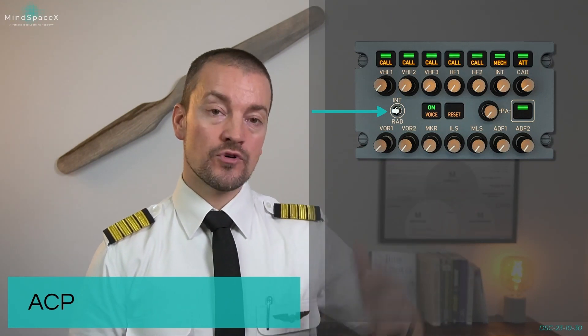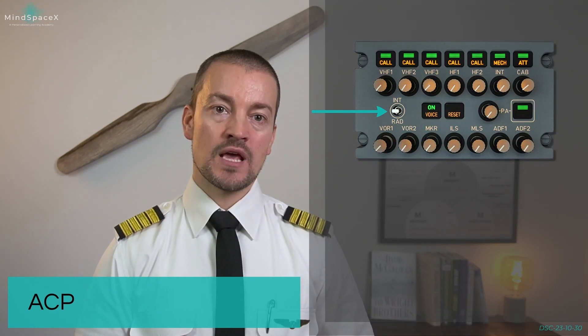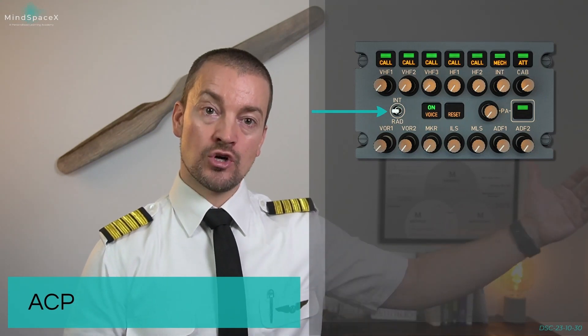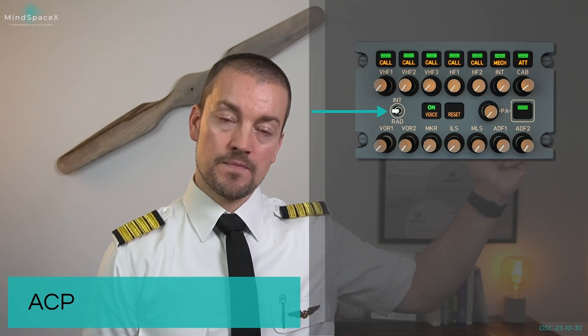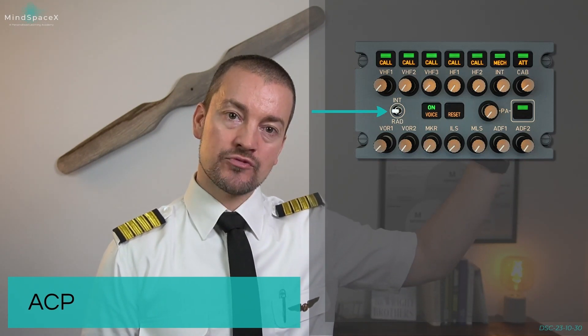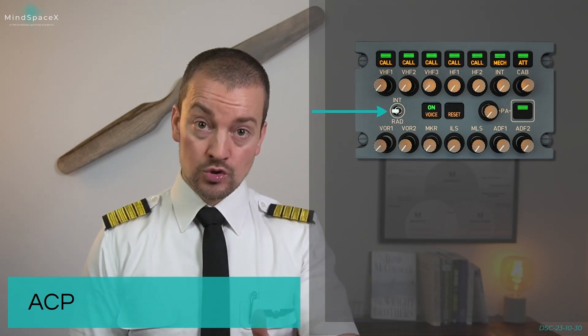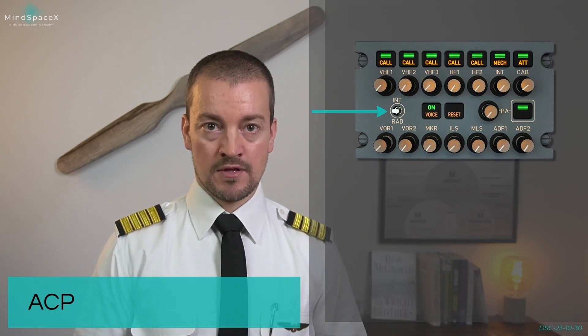We can use the interphone via the INT channel. For example, if the oxygen masks are donned and we want to establish open communication between the two flight crew members. When it comes to talking to passengers, there is a dedicated PA system for reception and transmission. There is also a dedicated cabin crew channel, and the INT mechanic channel is for communicating with ground personnel connected via the nose wheel bay, cargo compartments, engines, or around the aircraft.